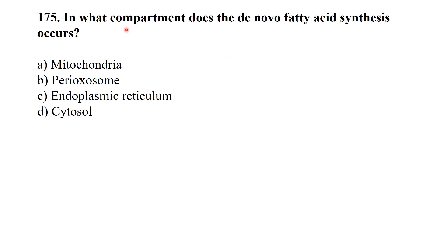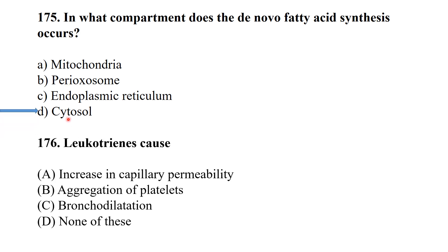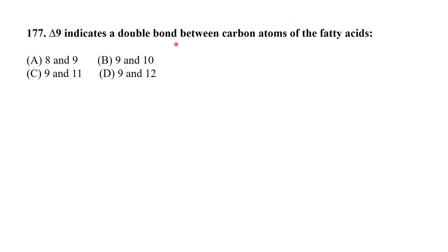MCQ 172: In what compartment does de novo fatty acid synthesis occur? The answer is the cytoplasm. MCQ 173: Regarding Delta-9 desaturase — the double bond in Delta-9 means the double bond is between carbon atoms 9 and 10.